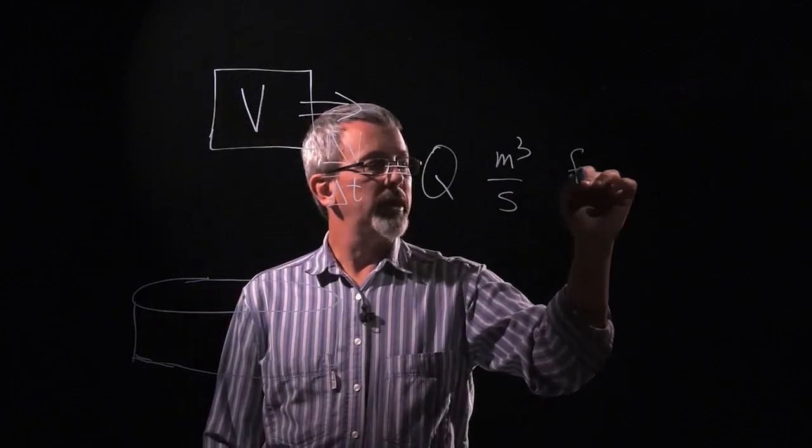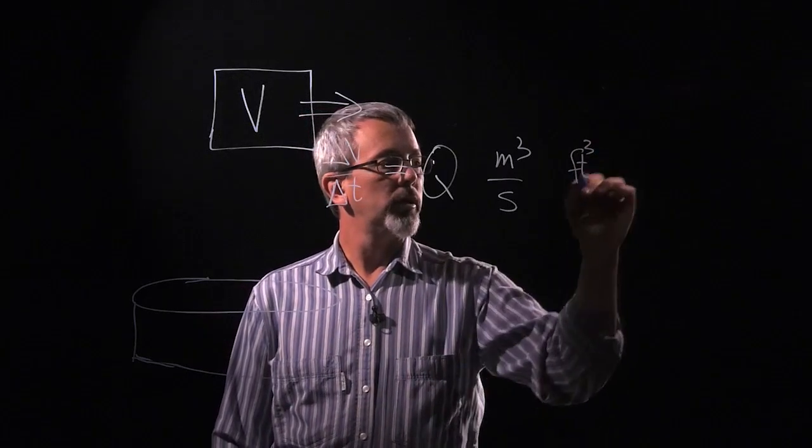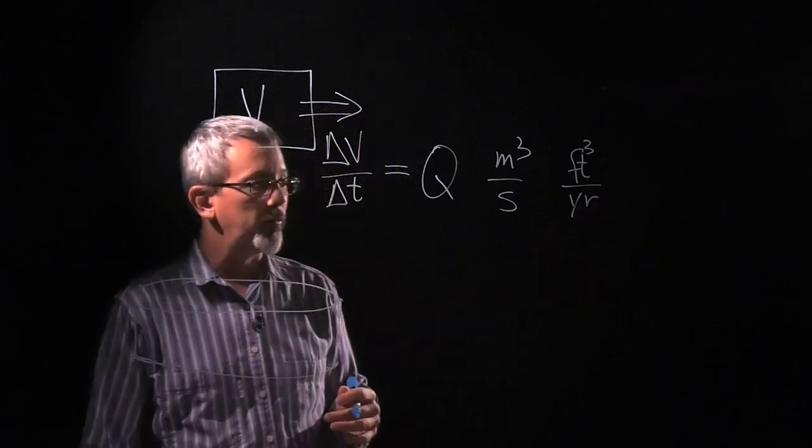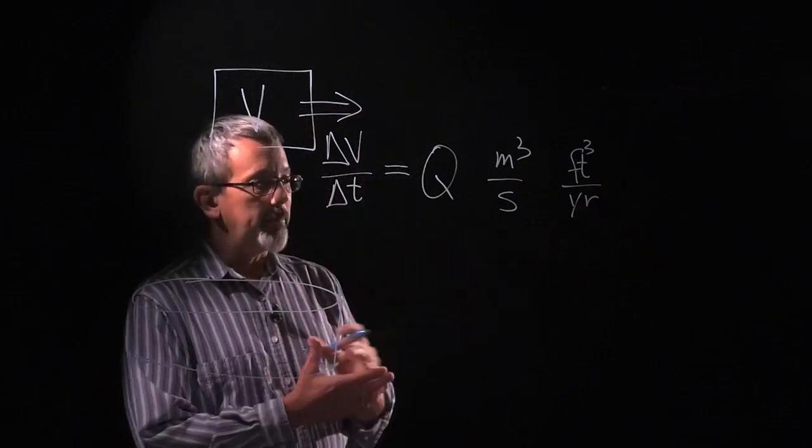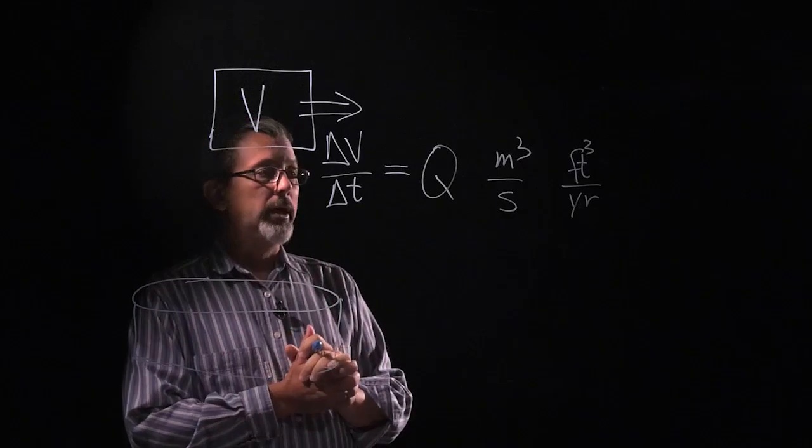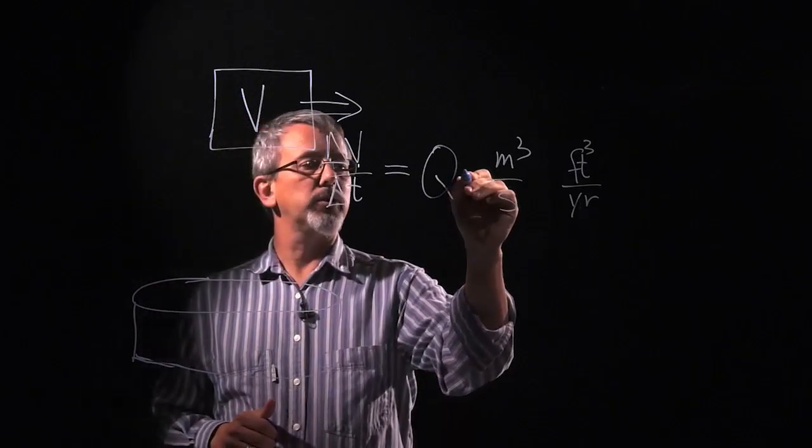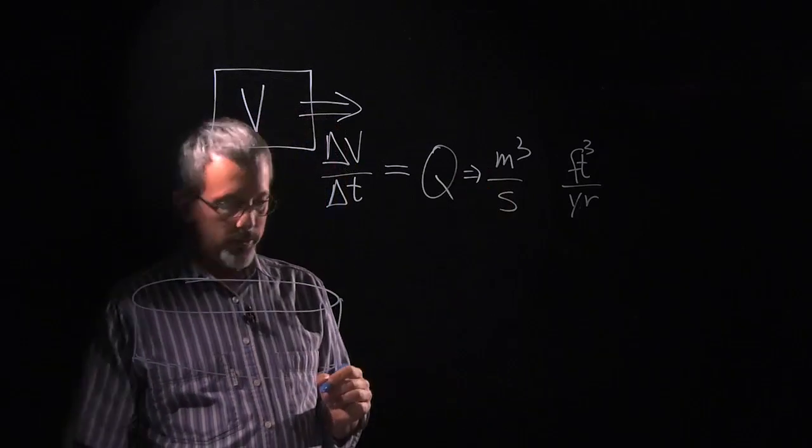Or we might have feet cubed per second or feet cubed per year if we're talking about very large time frames. Obviously that's probably a very large number if it's talking about something accumulating over the course of a year. So those are examples of units of flow.